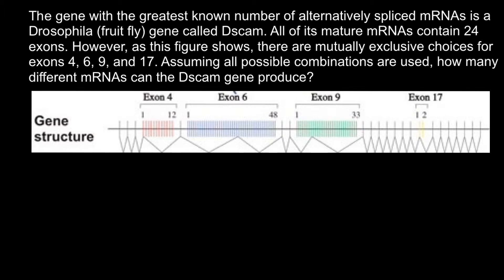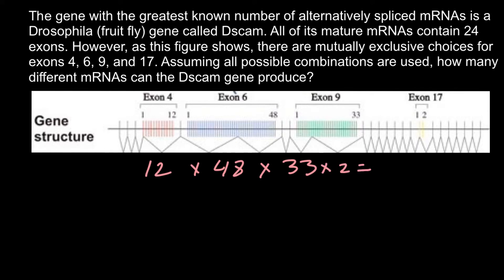In my previous video, I showed you simple calculations. We have 24 exons, but exons number 4, 6, 9, and 17 each have many variations, and only one of these variants would be found in the messenger RNA. For example, for exon number 4, 12 variants exist; for exon number 6, 48 variants exist. So in order to find the total number of combinations, we just multiply all these numbers: 12 × 48 × 33 × 2, and we get 38,016 different variants of the messenger RNA.